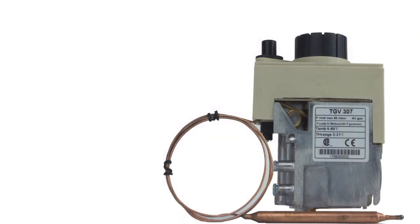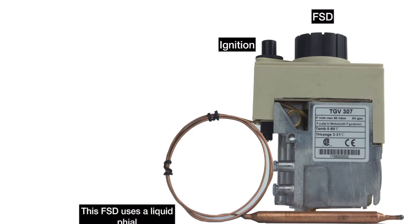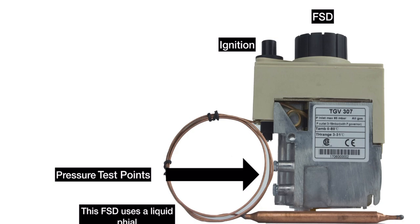Now, here's an example of a multifunction valve. There's your ignition on this one. You press that, it'll click, looks like a piezoelectric, like the small lighters. This will be your FSD that you press and hold in and wait for 10 seconds before it allows the valve to stay open. On this particular valve, it uses a liquid phial FSD, and you can see the phial and all the capillary tubing attached to the valve.